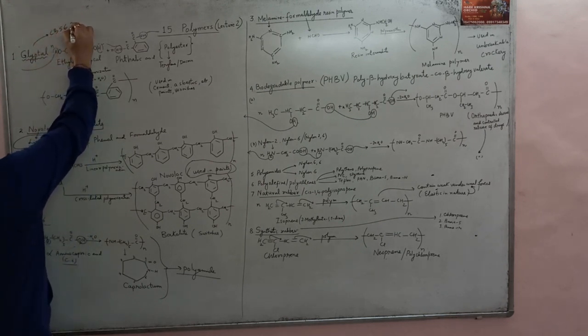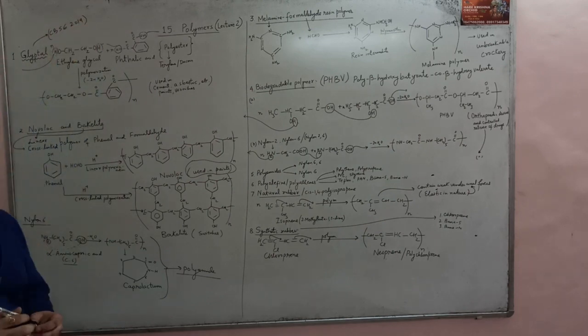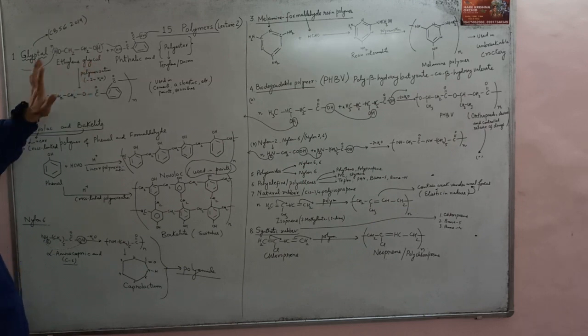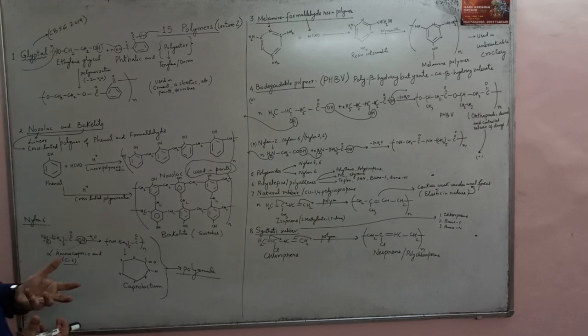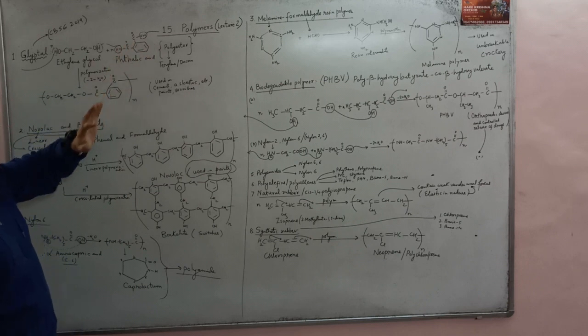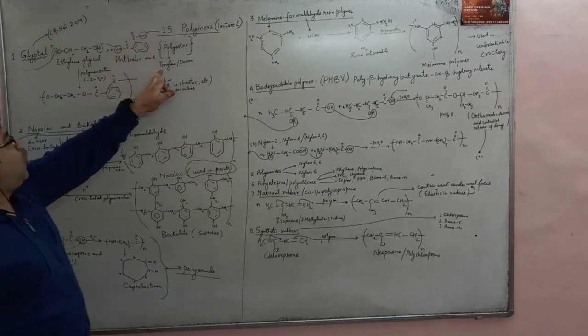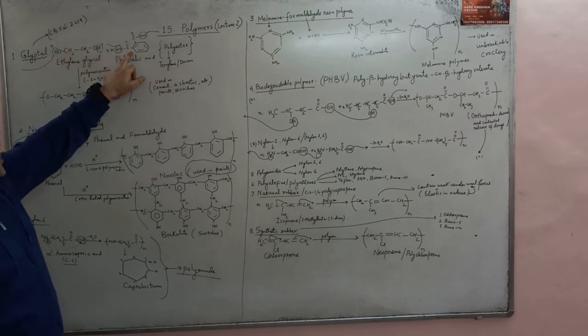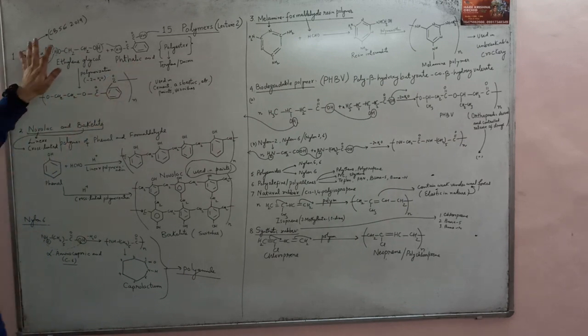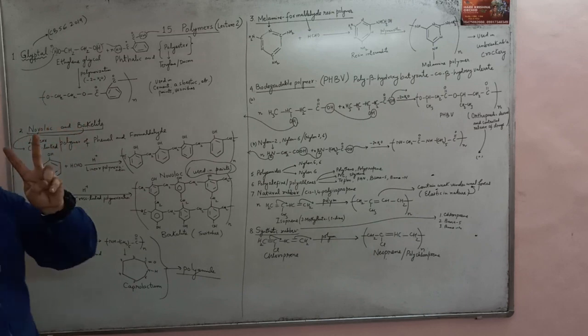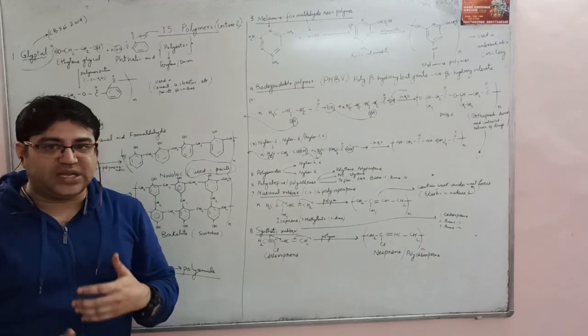Now let's start with a structure called glyptal. Glyptal was asked in a CBSE 2019 paper (Delhi). It is made from two monomers: ethylene glycol and phthalic acid. The IUPAC name of phthalic acid is benzene-1,2-dicarboxylic acid. Just like Terylene or Dacron, it is made from an alcohol and a carboxylic acid, so it is the second example of polyester.